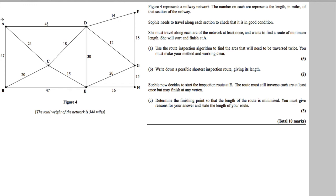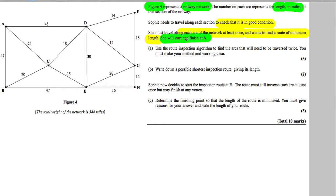We've got question 5 here with a network. Figure 4 represents a railway network; the number on each arc represents the length in miles of that section. Sophie needs to travel along each section to check it is in good condition. She must travel along each arc at least once and wants to find the minimum length, starting and finishing at A. We are solving the Chinese Postman problem, or route inspection problem. Use the route inspection algorithm to find the arcs that will need to be traversed twice.